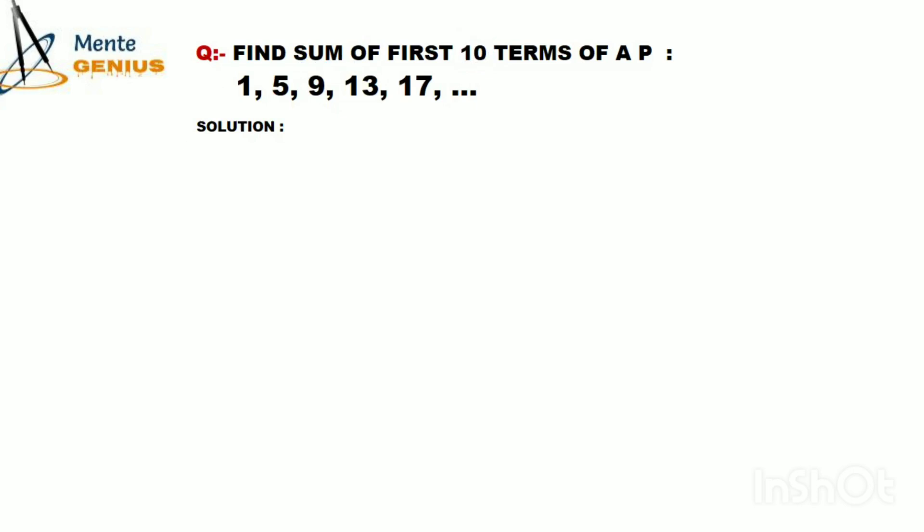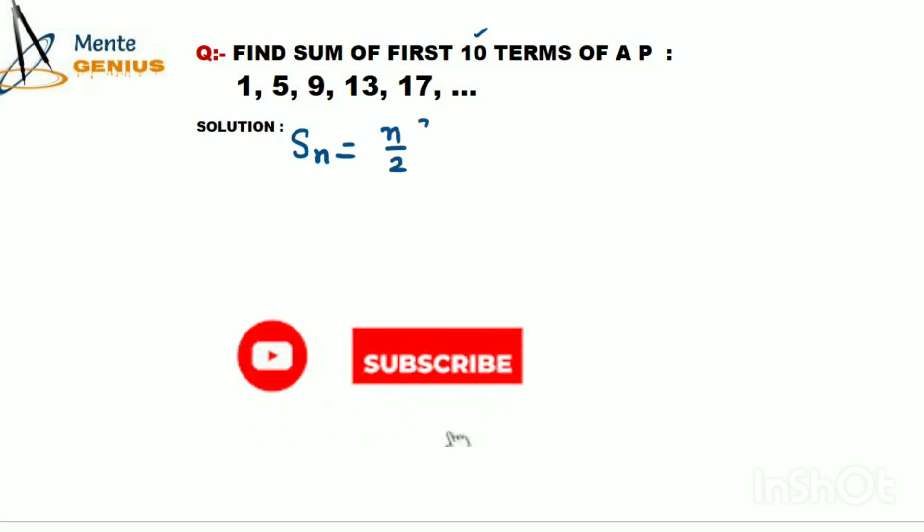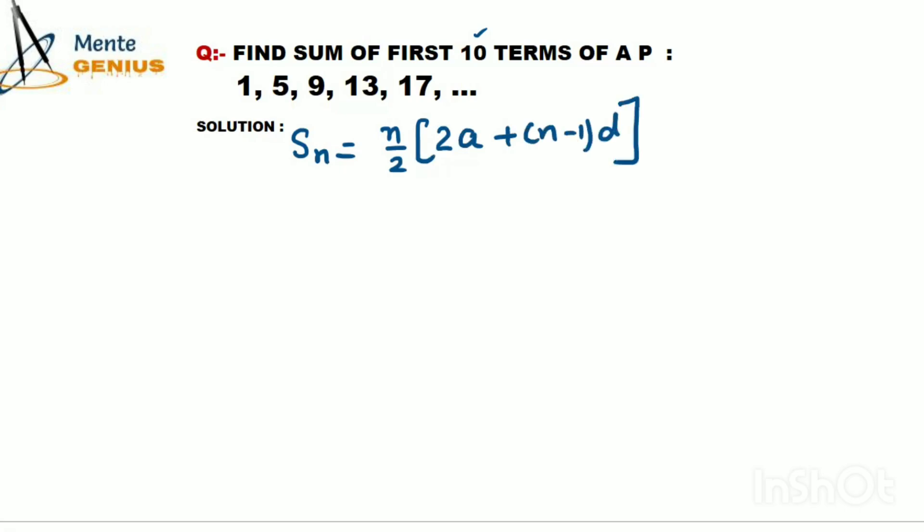To find the sum Sn, n is the number of terms. Here n would be 10. The formula is: Sn = n/2[2a + (n-1)d]. Let me explain what these are: a is the first term, the very first term given. In the formula we need n, the number of terms, which is 10 here.